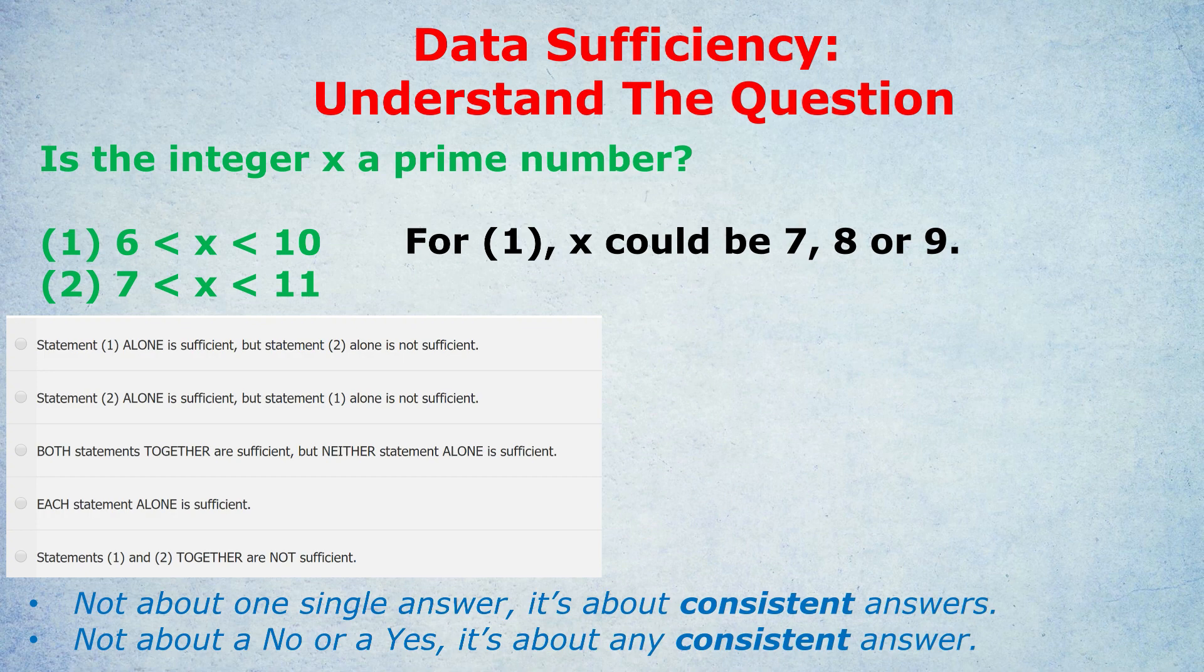First lesson that I want to get across is that it's not about getting one single answer, it's about getting consistent answers. For example, looking at statement 1, we know x is an integer, and we know it's between 6 and 10. So x has to be 7, 8, or 9. That doesn't mean automatically that that statement is insufficient.